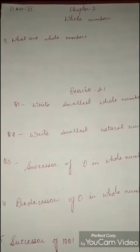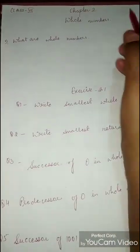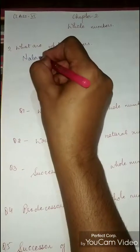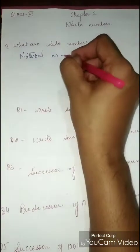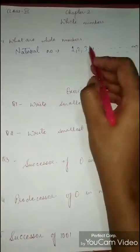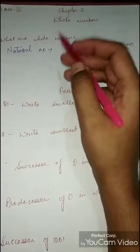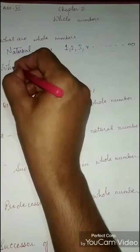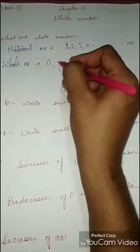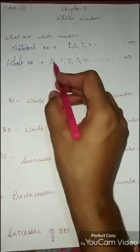Class 6, the next chapter we will start is Chapter 2 - Whole Numbers. What are whole numbers? We have studied that natural numbers are numbers which start from one and continue up to infinity. Whole numbers are numbers which start from zero. The smallest whole number is zero, and all natural numbers are included. Natural numbers start from one.